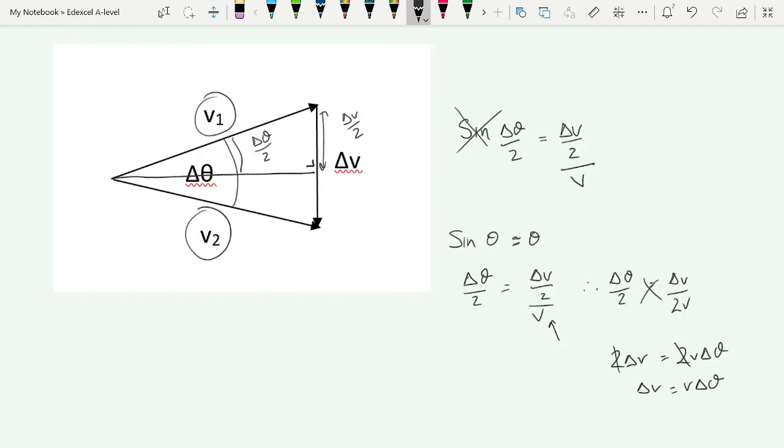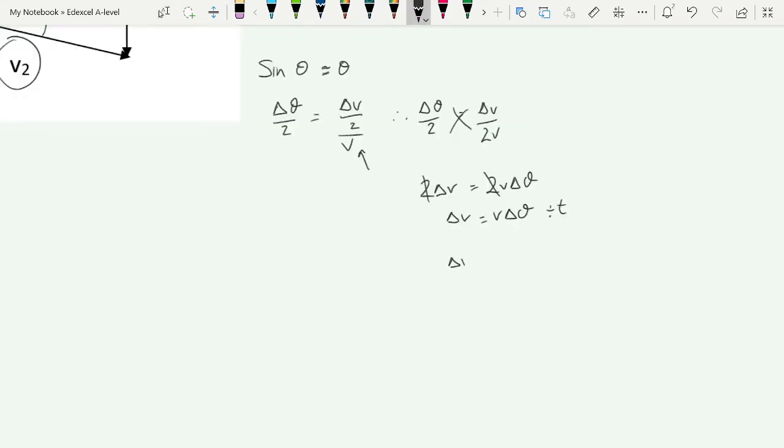The next step is we're going to divide across by T, giving us delta V over T is equal to V delta theta over T. And of course we should know that delta V over T is A, so that means that A is equal to V delta theta over T. And we should also know that delta theta over T is omega, so that means that A is equal to V omega.